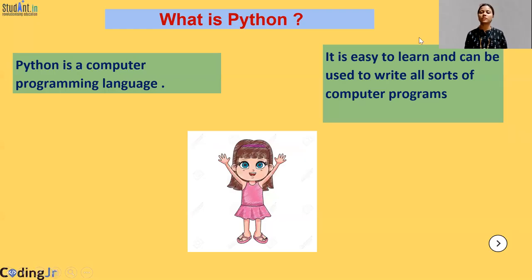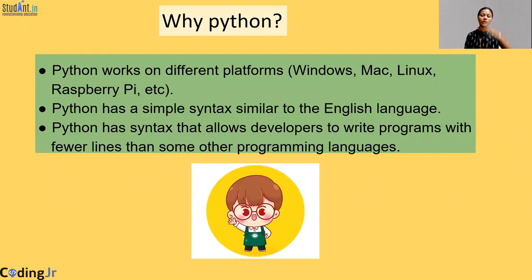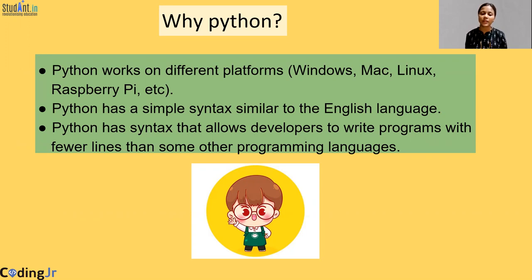Now that we clearly understand what computer programs are, we can move to Python. Python is basically one such programming language. It is very easy to learn, quite efficient, and can write all sorts of computer programs. There are many other programming languages as well, but Python has various advantages. Python is platform independent — it can be used on almost all operating systems. The syntax and codes written in Python are very simple and close to the English language. Also, the codes in Python are quite short due to the availability of enriched library functions.